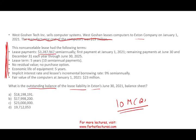This is a non-cancelable lease with the following terms: the lease payment is $3,287,947, semi-annual — twice a year. First payment January 1st; remaining payments on June and December each year through June 30th, 2025. The lease term is five years, 10 semi-annual payments. No residual value, no purchase option. Economic life of the equipment is five years. Implicit interest rate and incremental borrowing rate: 9%. Fair value of the computer as of January 1st is $23 million. They want to know Exton's lease liability as of June 30th, 2021.